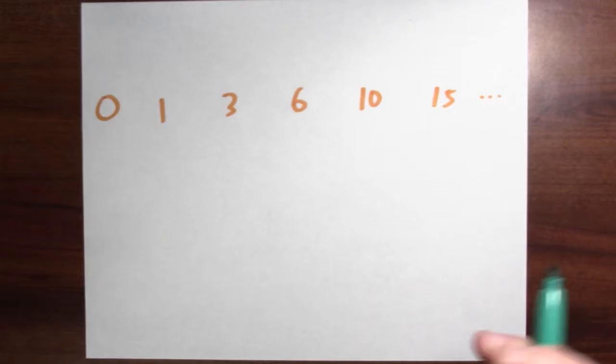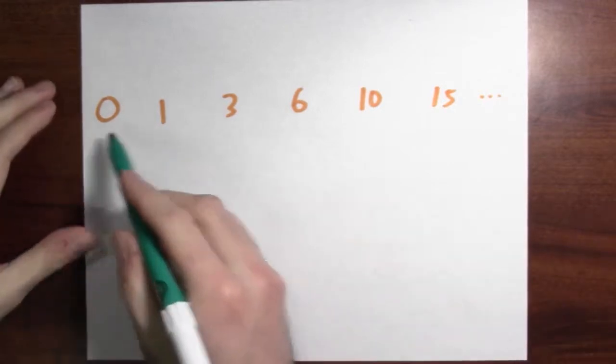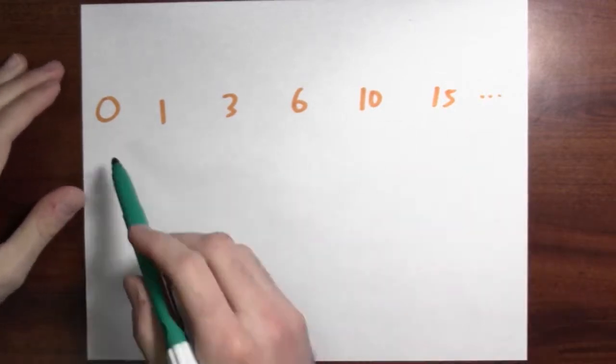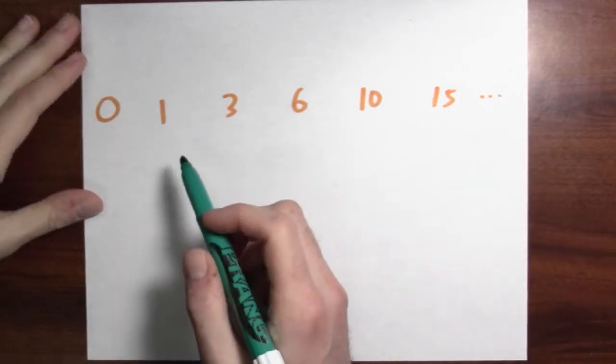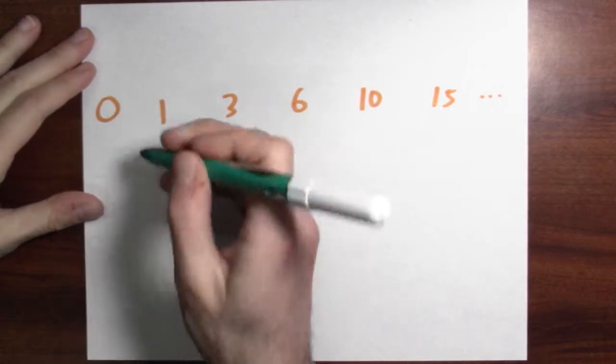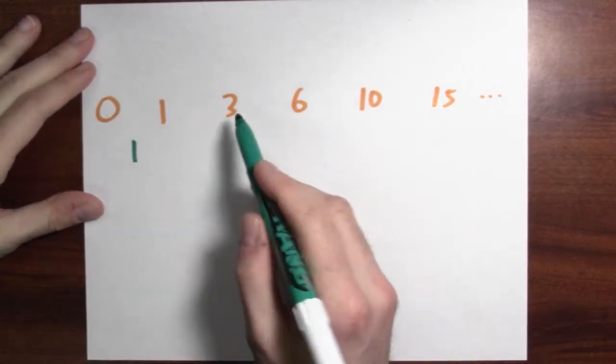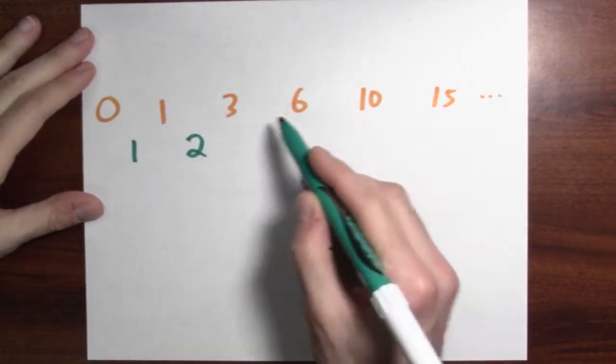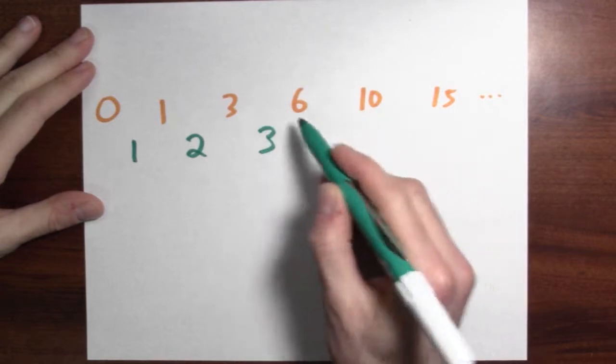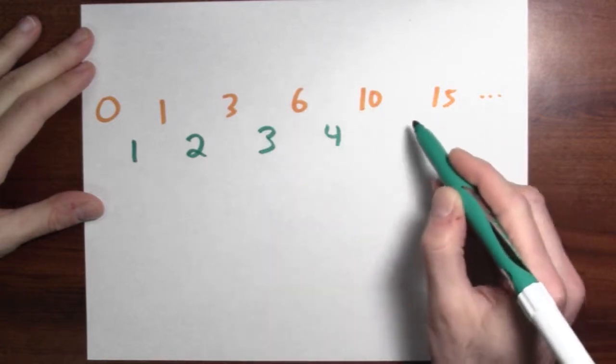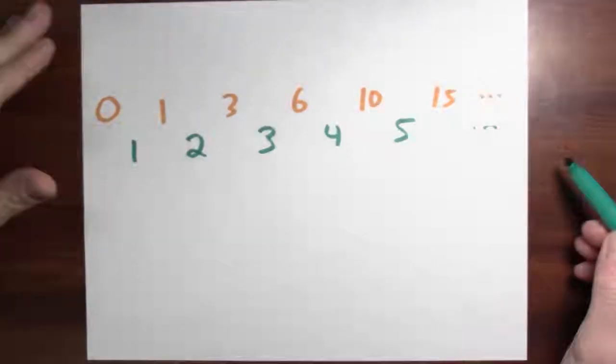The difference operator is like differentiation, but it amounts to writing down a new list — the list of differences between successive numbers. If I just had this list of numbers, I could write down those differences: 1 minus 0 is 1, 3 minus 1 is 2, 6 minus 3 is 3, 10 minus 6 is 4, 15 minus 10 is 5, and so forth.